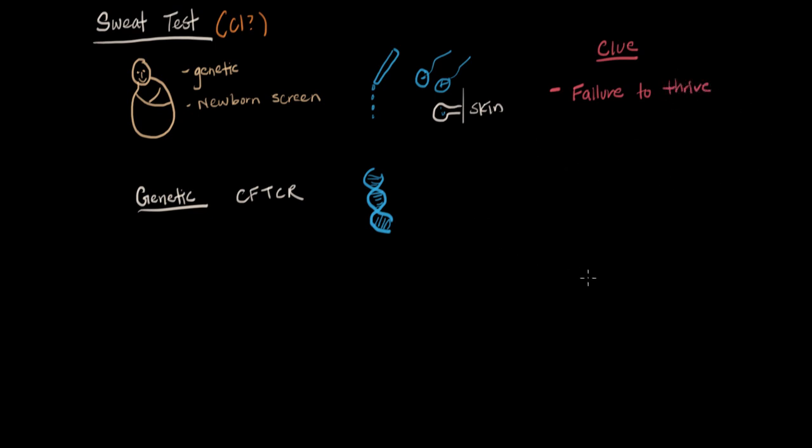And the first thing you do is make sure the parents are feeding them correctly. But after that you start looking for what we call organic causes, or what's within the baby's metabolism that causes this. And CF is a big one. So failure to thrive, maybe it's good to do a sweat test.